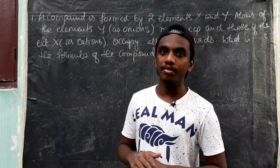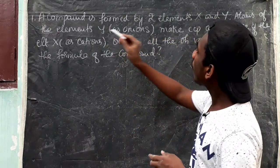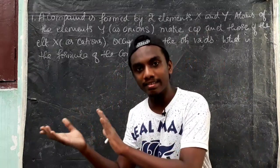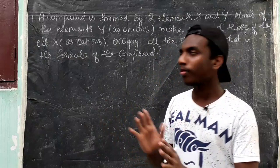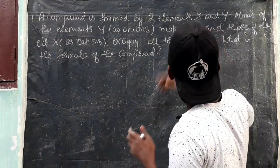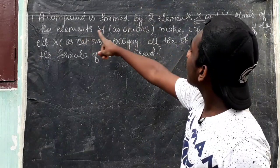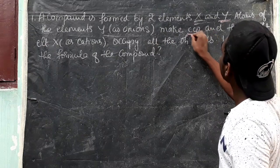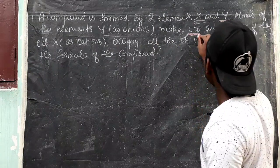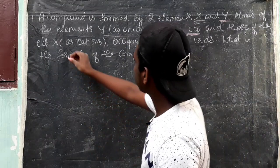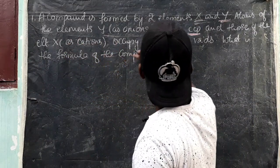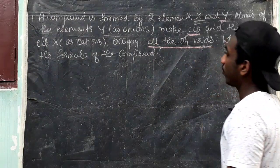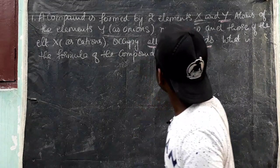Now we will learn a question. A compound is formed by two elements X and Y. Atoms of element Y form a CCP lattice as anions, and those of element X as cations occupy all the tetrahedral and all the octahedral voids. Find the formula of the compound.